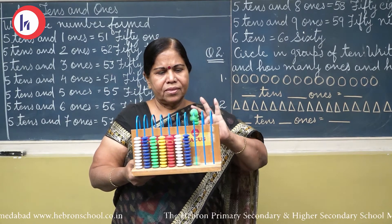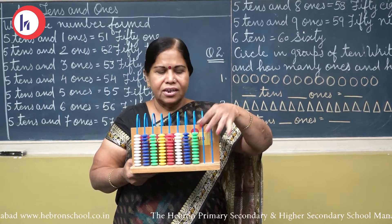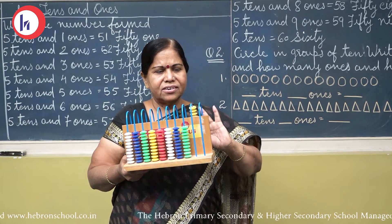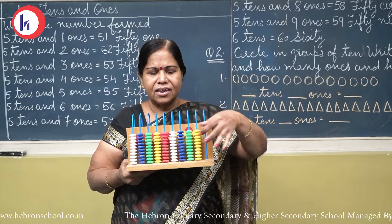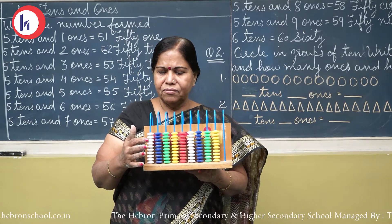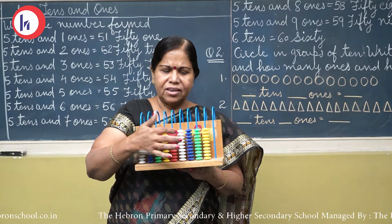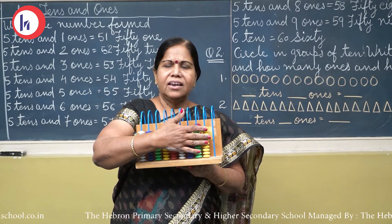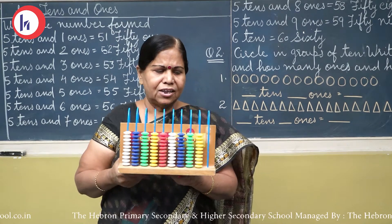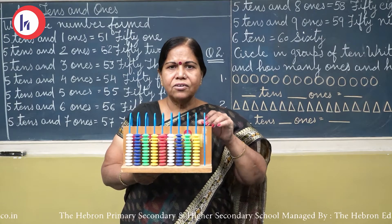So 10, 20, 30, 40, 50 and 9 — 59 are there. Now 1 more bead. Now let us count: 1, 2, 3, 4, 5, 6 — 6 tens are there. And 6 tens means 60.